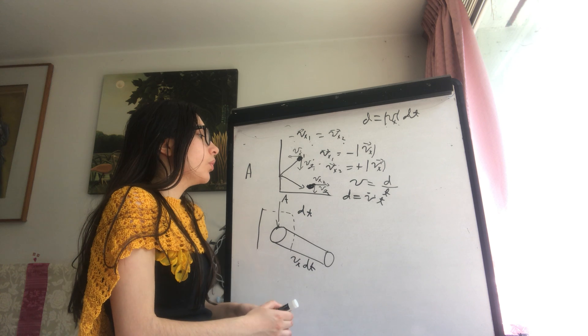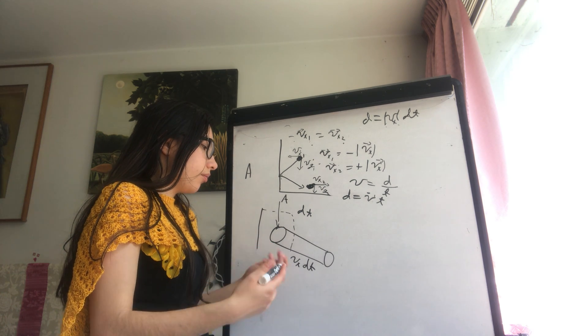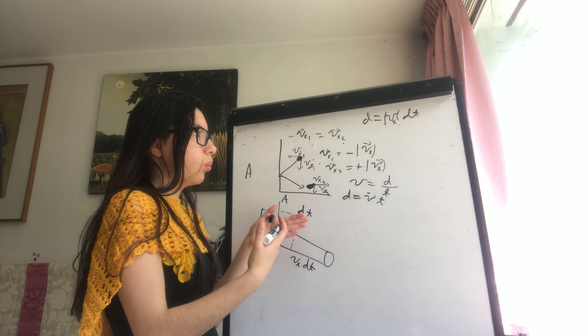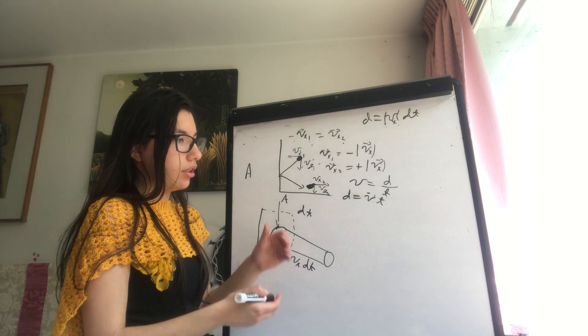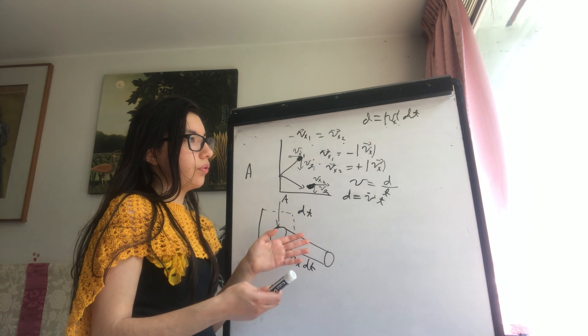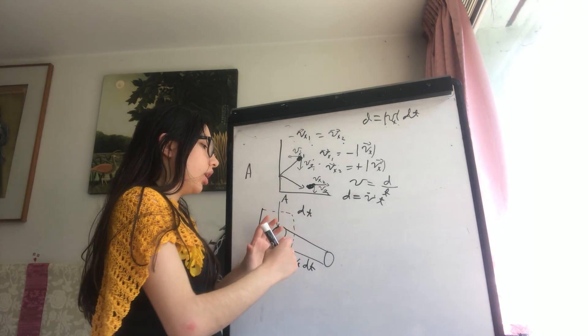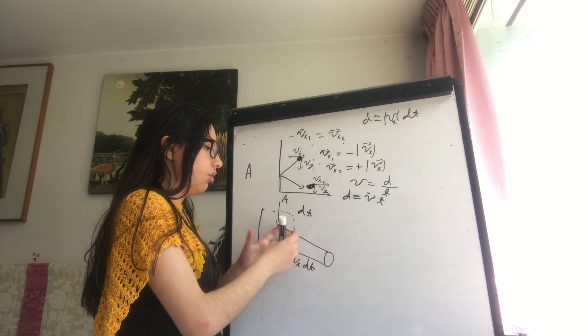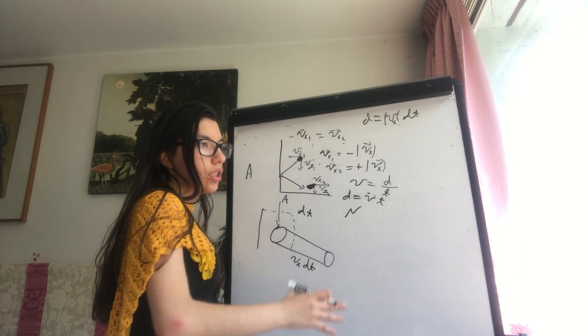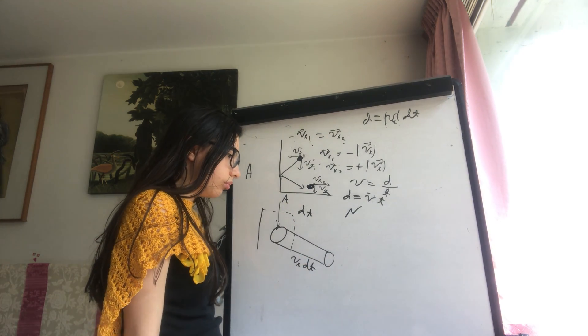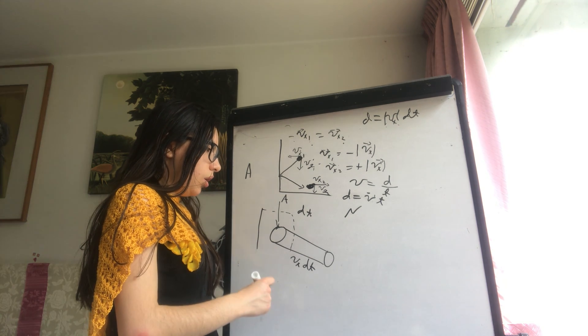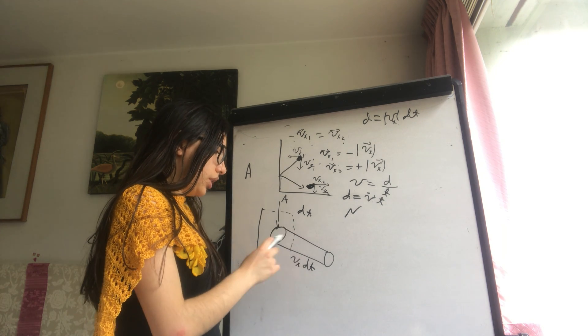Now, what is the number of particles in this cylinder? Let's say N is the number of particles that we have. If we want to find N, what's the volume of this cylinder? Volume equals area times distance.